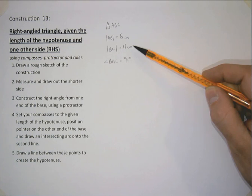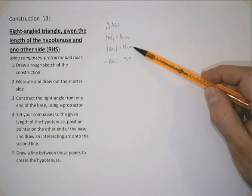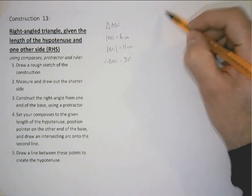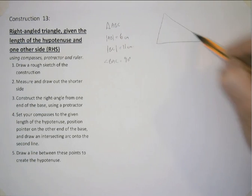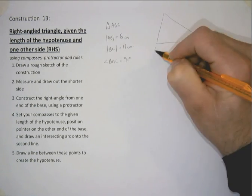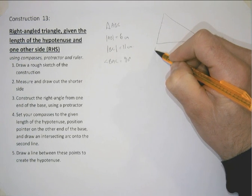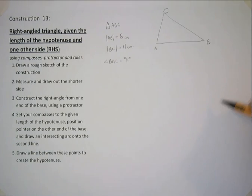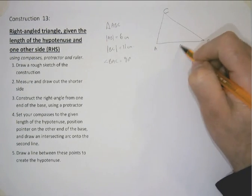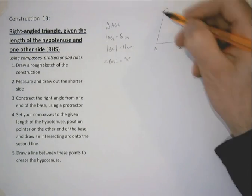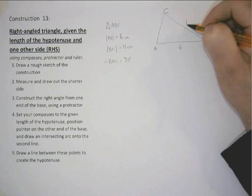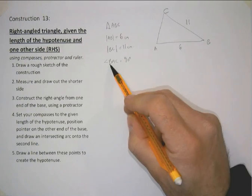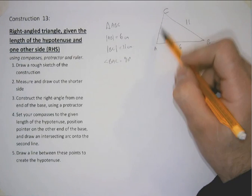This is our hypotenuse, the longest side. But just to confirm that, we create ourselves a triangle, call it ABC. The side AB is 6, the side BC is 11. And the angle at BAC, BAC is a right angle.